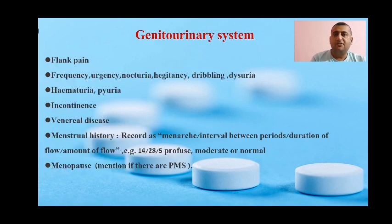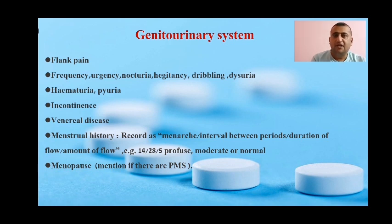In genitourinary system review, ask about flank pain, frequency, urgency, nocturia, hesitancy, dribbling, dysuria, hematuria, pyuria, incontinence of urine, history of venereal diseases, and if the patient is female, also ask about menstrual history.